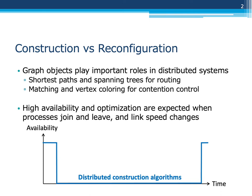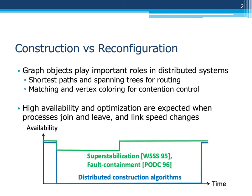There have been many distributed construction algorithms for these graph objects. However, these construction algorithms cannot provide any uninterrupted construction. There have also been many discussions on how to localize the effect of dynamic changes, for example, superstabilization and fault containment.